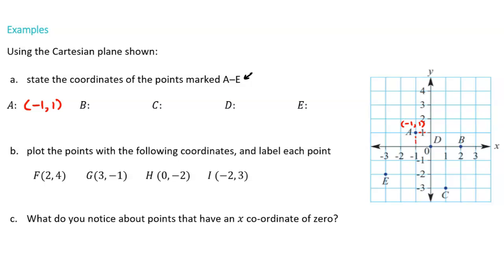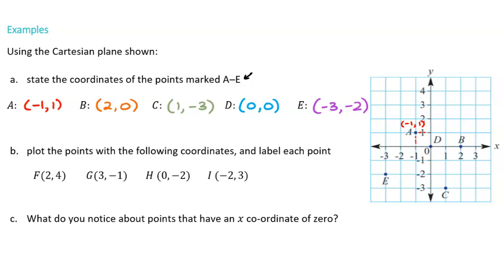Point A is at negative one on the x-axis and positive one on the y-axis, so it's (negative 1, 1). For point B, we go two units to the right but don't move up or down, so the x-coordinate is 2 and the y-coordinate is zero: (2, 0). Point C has moved one unit right and three units down, lining up with negative 3, so that's (1, negative 3). Point D is right at the center — no movement at all — so it has the coordinates of the origin. For point E, if you said (negative 2, negative 3) you've mixed up your coordinates; the correct answer is (negative 3, negative 2), remembering to go in the x-direction first.